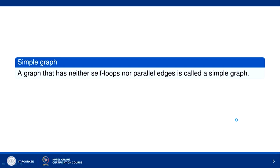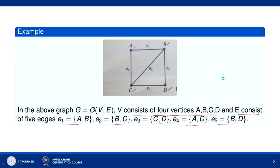Now let us see what is a simple graph. A graph that has neither self-loops nor parallel edges is called a simple graph. This graph is a simple graph because it does not contain parallel edges.